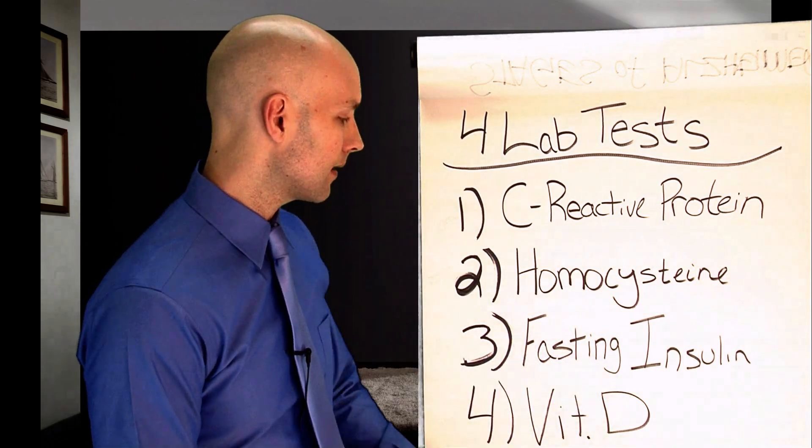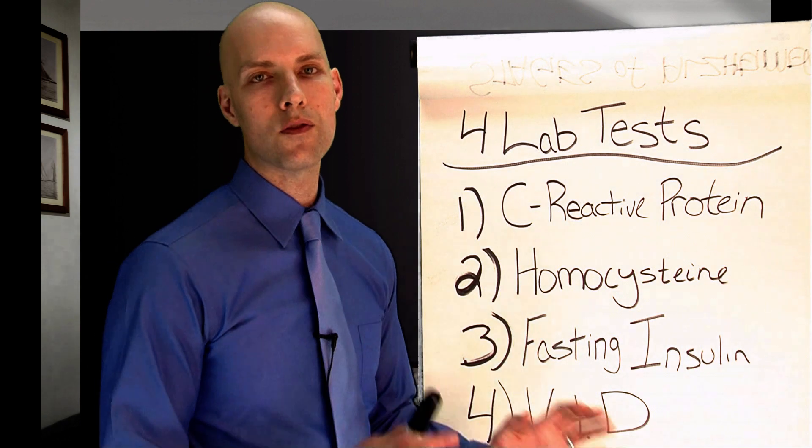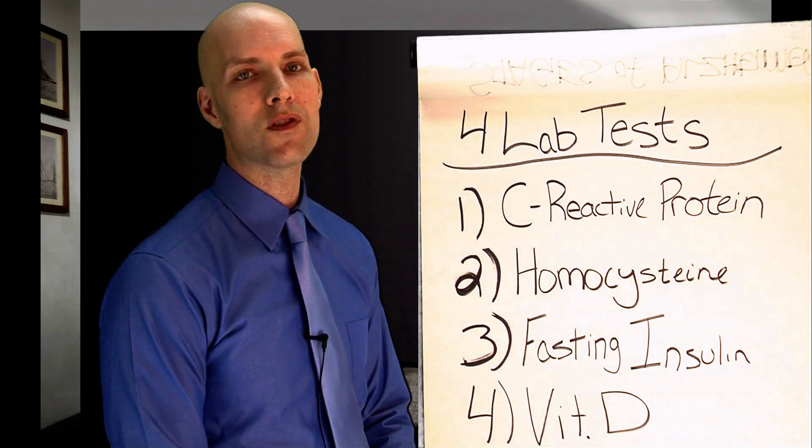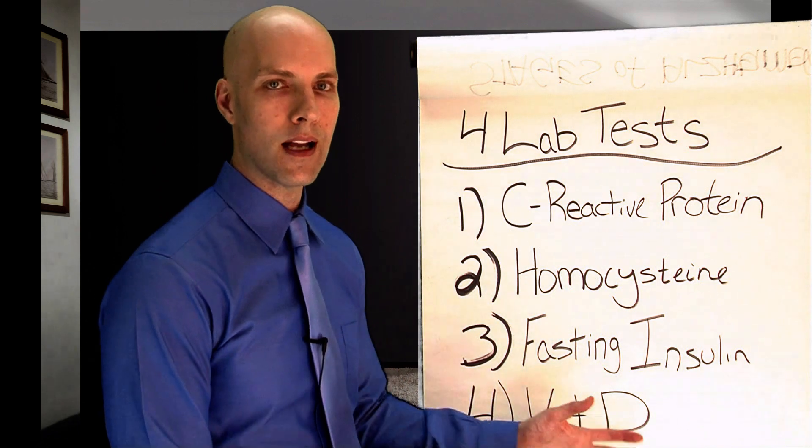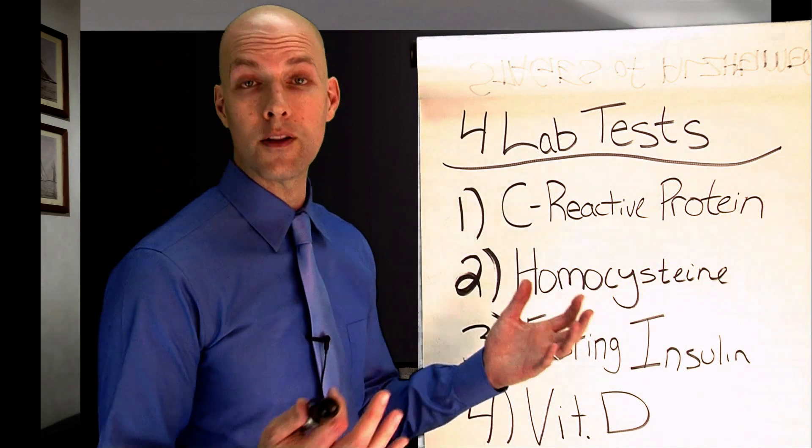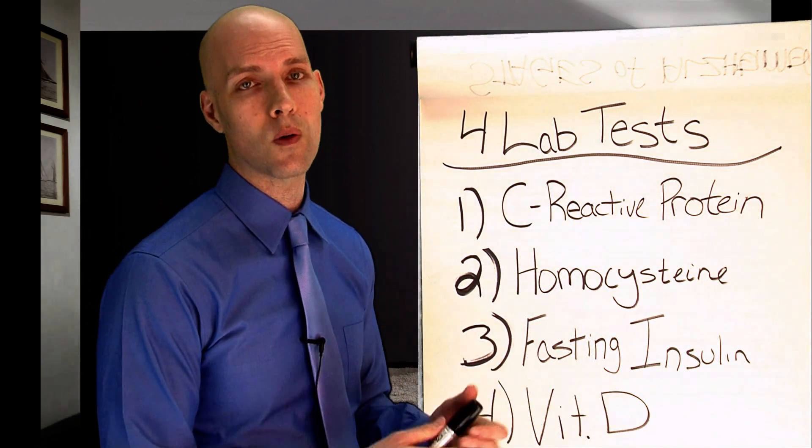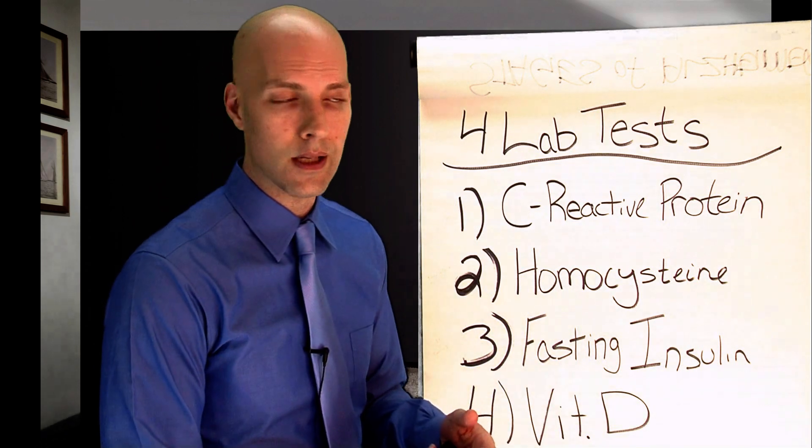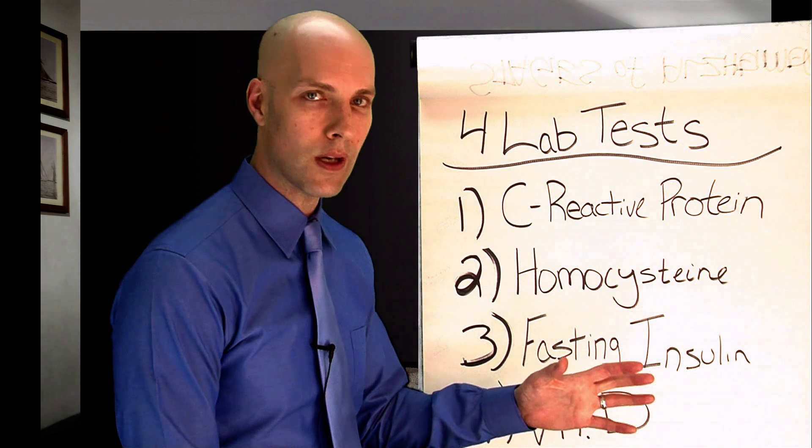So that's fasting insulin. So the next one is vitamin D and vitamin D is super important in the body for so many different functions. It acts more like a hormone than a vitamin and it's just super important. Your immune system depends on it. And when I run it in patients, I see that it's chronically deficient in so many different patients. Now the lab range is typically 40 to 80, 40 to 100.